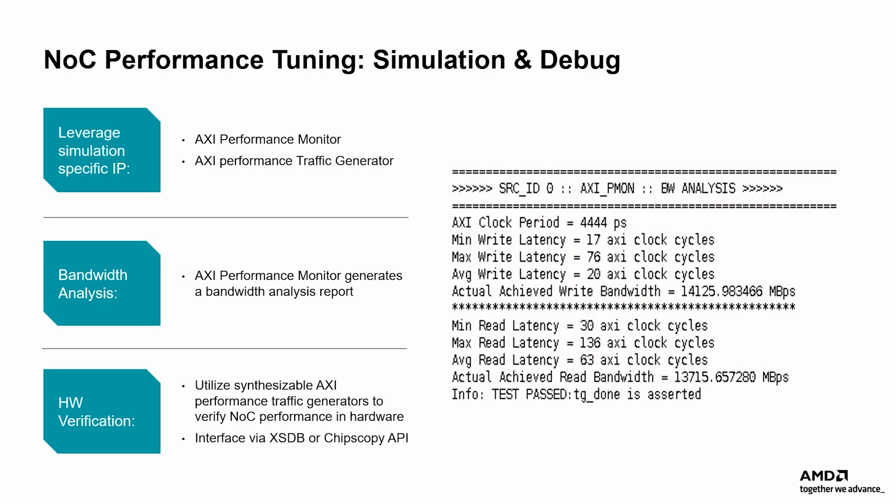In NOC simulation, the AXI performance monitor is a key tool for analyzing bandwidth utilization and identifying potential bottlenecks, both in simulation and during on-hardware validation. Traffic generators can be used to produce synthetic, controllable data patterns that stress specific NOC paths, allowing you to validate bandwidth, latency, and arbitration behavior before introducing real application traffic. These synthetic tests help isolate variables, making it easier to evaluate design decisions such as QoS settings, channel allocation, or NMU and NSU placement. Additional debugging tools within the simulation environment enable verification of QoS effectiveness and confirmation that latency targets are being met, ensuring that the interconnect behaves as expected under various load conditions.